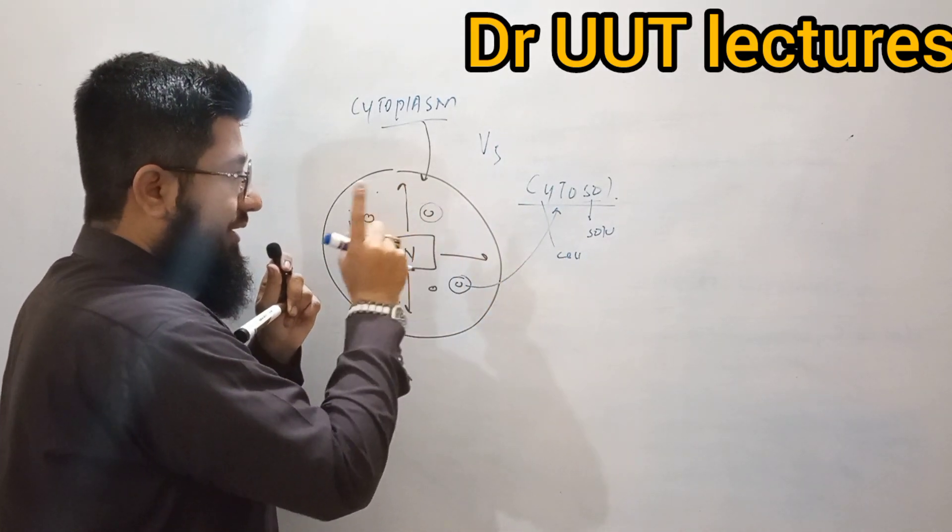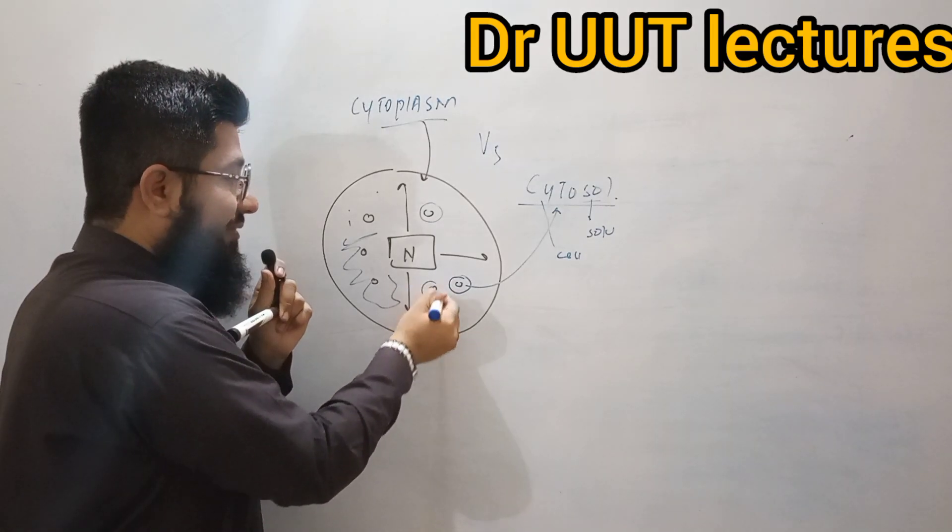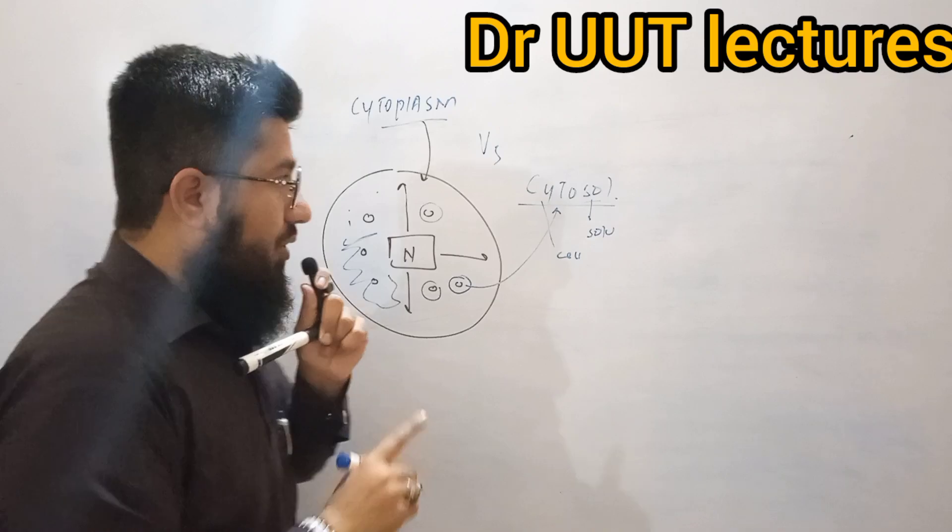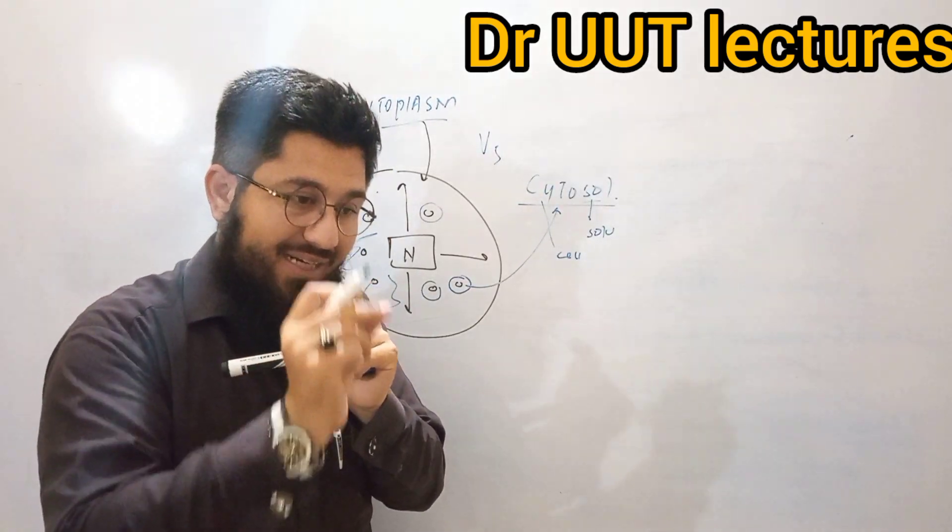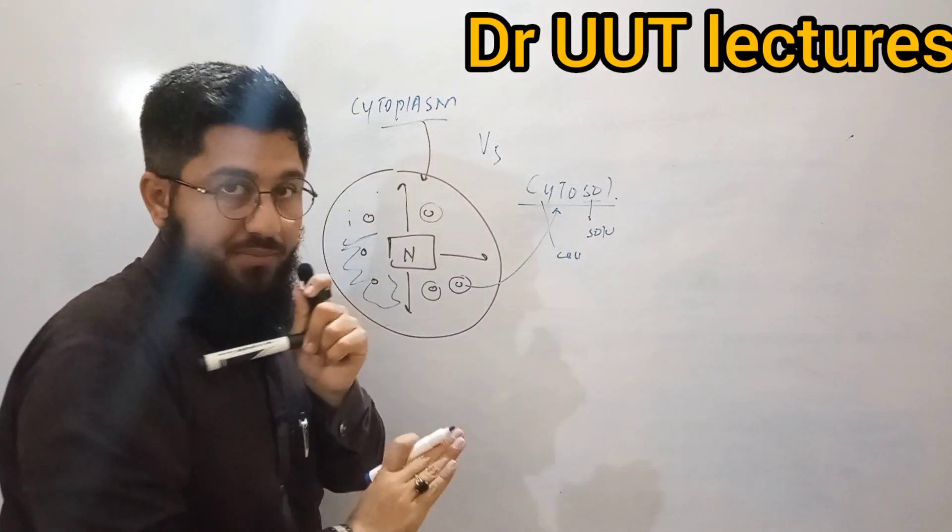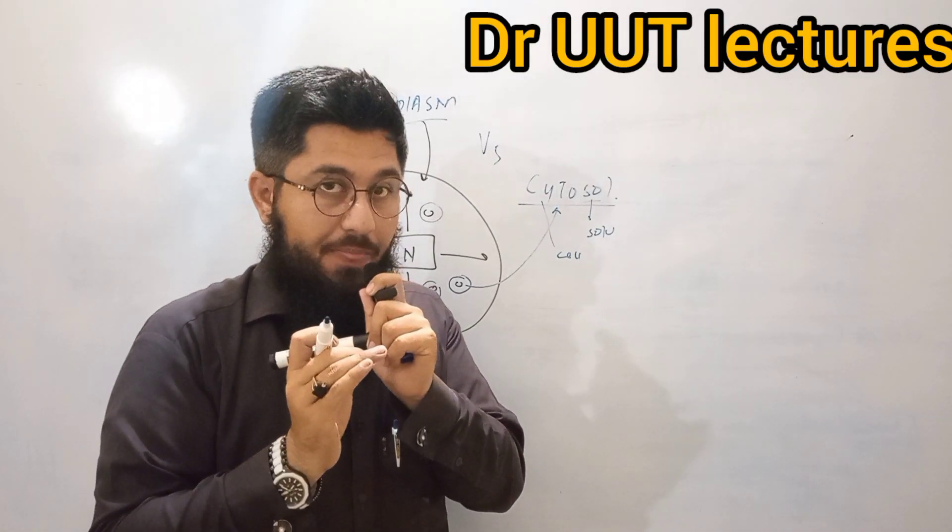Cytosol refers to the fluid that is surrounding the organelle. Here we have organelle, organelle is surrounded by certain fluid. That fluid is actually called cytosol. So in short, cytosol is the fluid surrounding the organelle, whereas the fluid present in the entire cell is called cytoplasm. This is the very difference between cytosol and cytoplasm. I hope you got it.